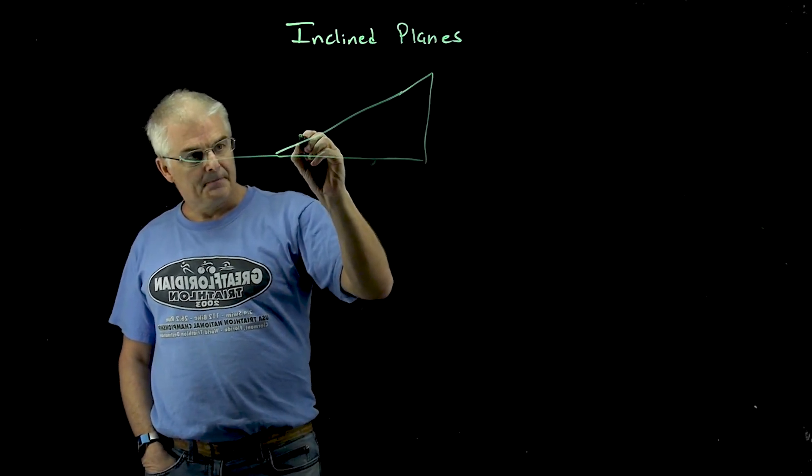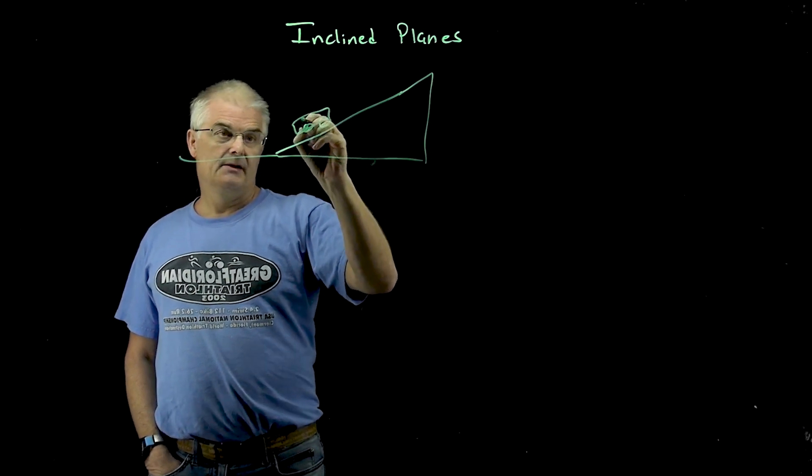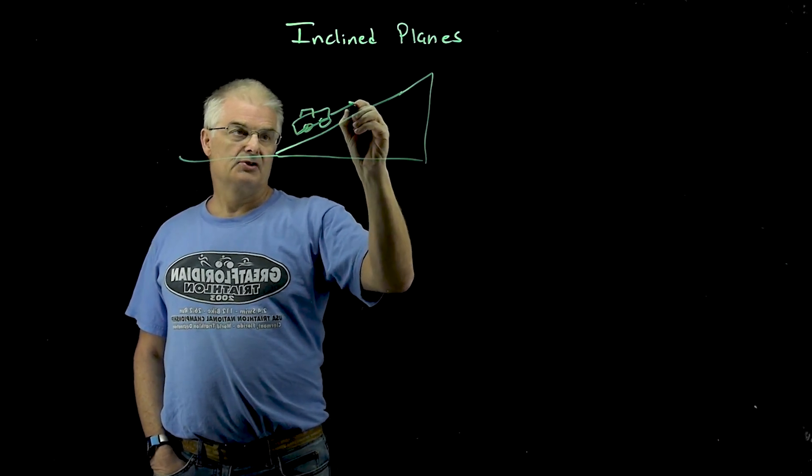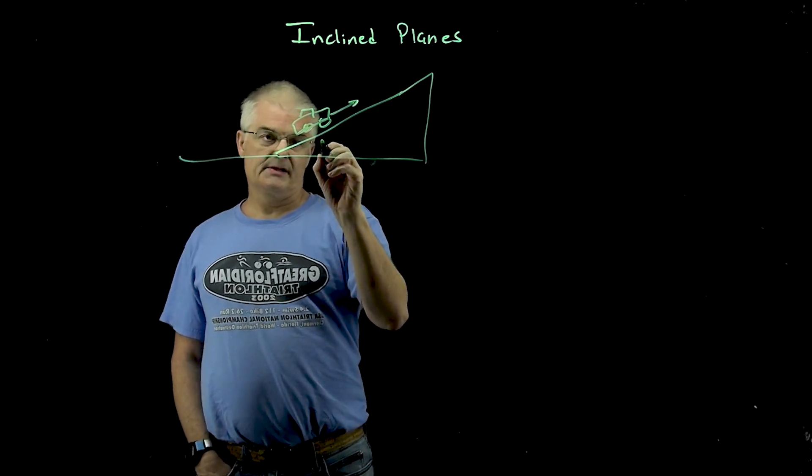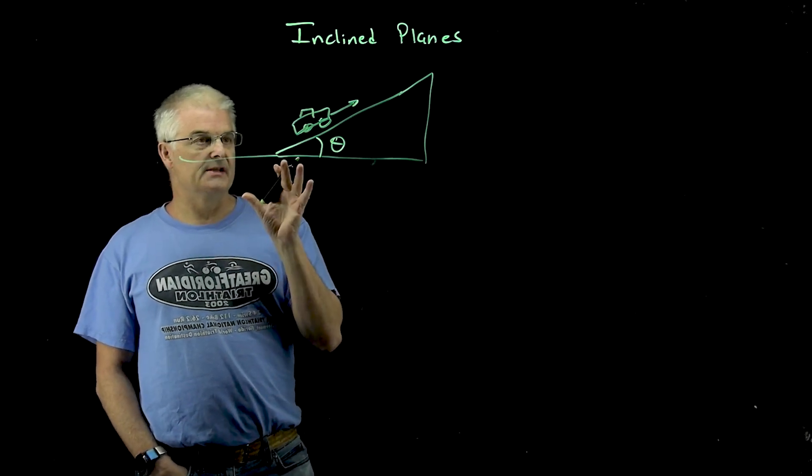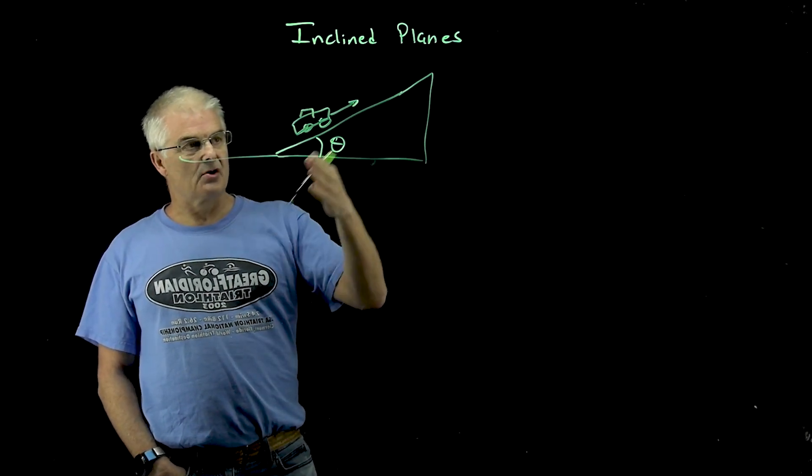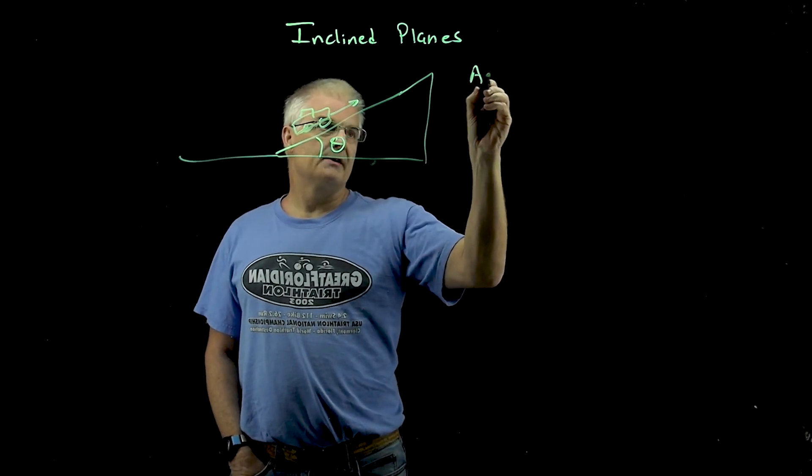Let's say that we've got a car that's on a ramp. That's the incline plane. It's a car, and maybe it's going up the ramp. And the trick on this is that it's going to have an angle. We'll call this angle theta. And the question is what's going to cause the car to go basically up or down. And the big question is all about its acceleration.